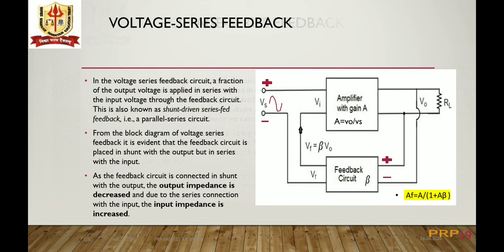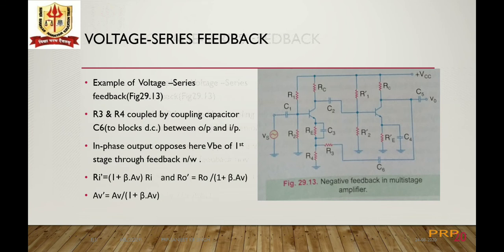The circuit diagram shows negative feedback in a multi-stage amplifier as an example of voltage series feedback. R3 and R4 are the coupling path for the output voltage taken from the collector of the second stage, and capacitor C6 is placed in between to block any DC component going toward the input feedback signal.